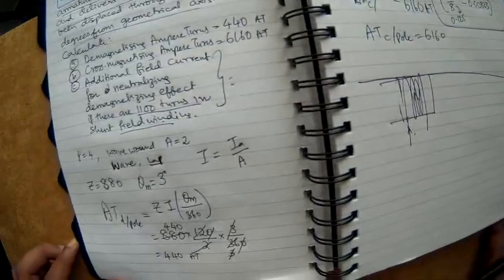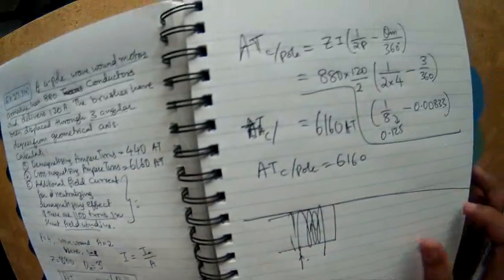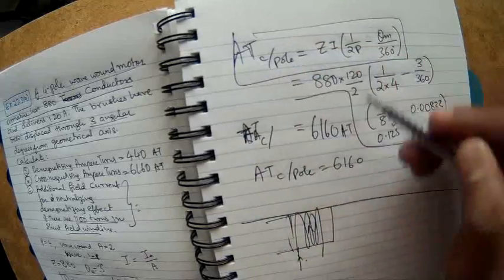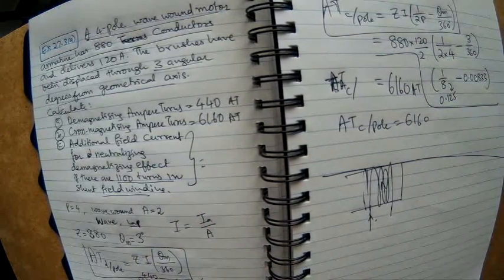So to revise, it is very simple. I just used the formulas which we derived earlier and then simply substituted the numbers into it. This is how we calculate the ampere turns.